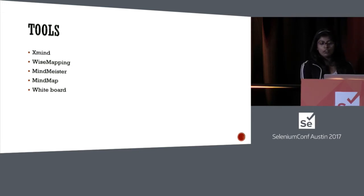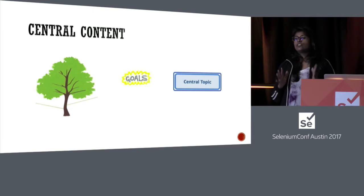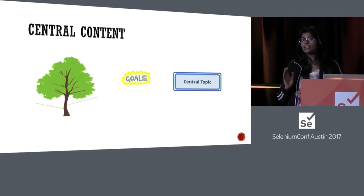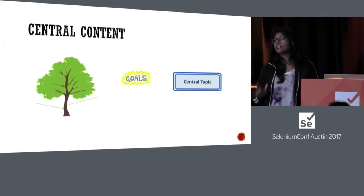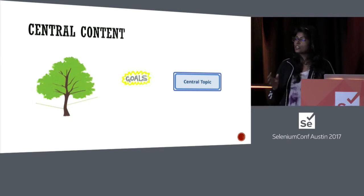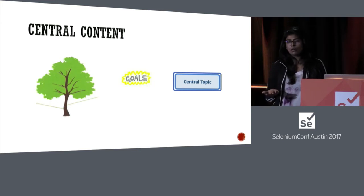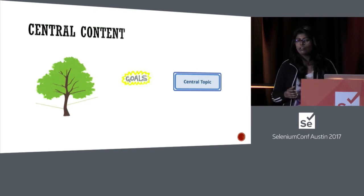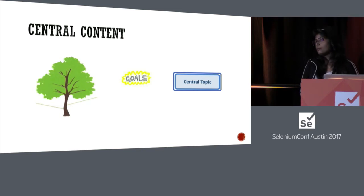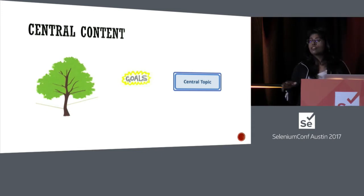Once you've decided on your tool, mind maps are all based on a central content — what you want to test — like the trunk of the tree from where all ideas emerge. The important thing is to identify the central content. If you're testing a feature with four to five core functionalities, rather than putting all in a single mind map, put each core functionality in a different mind map. If you have three user stories in a sprint, all different, they'll have three different mind maps based on the core functionality of each story.